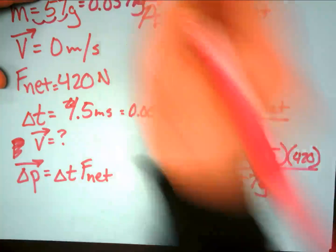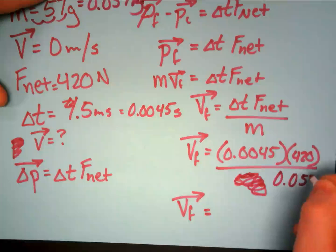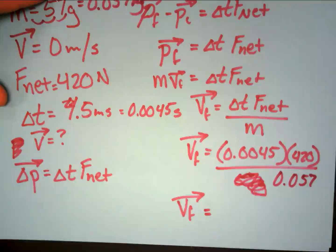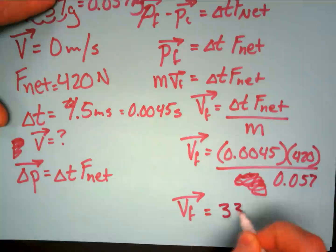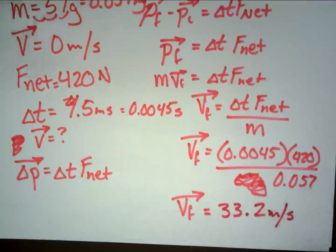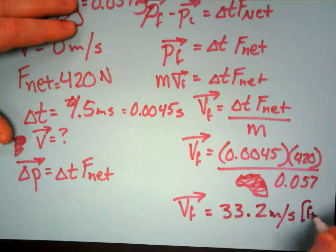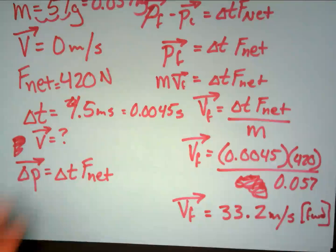Using 0.057 kilograms — not 57 grams — the final velocity works out to approximately 33.2 meters per second forward. That is the answer for part A.